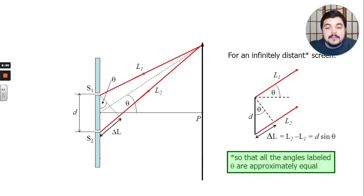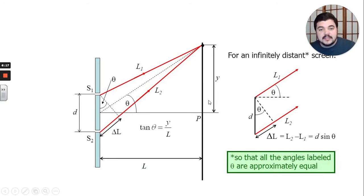So here we are, same picture as before. Now we're going to label capital L the distance from the slits over to the screen. And we're going to label y the distance from this central point up to the point on the screen which we're referencing right now. And tangent theta then we can see is this distance y over this distance L.